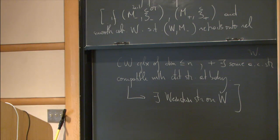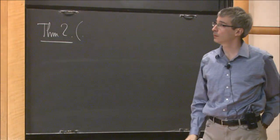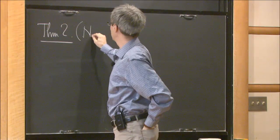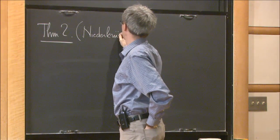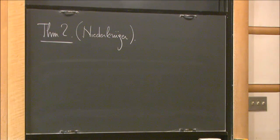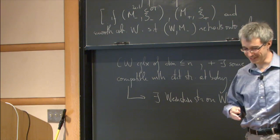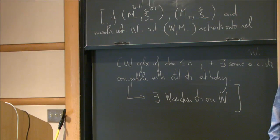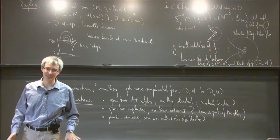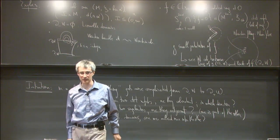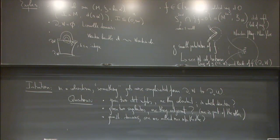Theorem 2, which I attribute to Niederkruger — though it also relies on equivalent characterizations by Casals-Murphy-Pressas — is that there is no Liouville cobordism W such that the negative boundary is hyper-tight and the positive boundary is over-twisted.